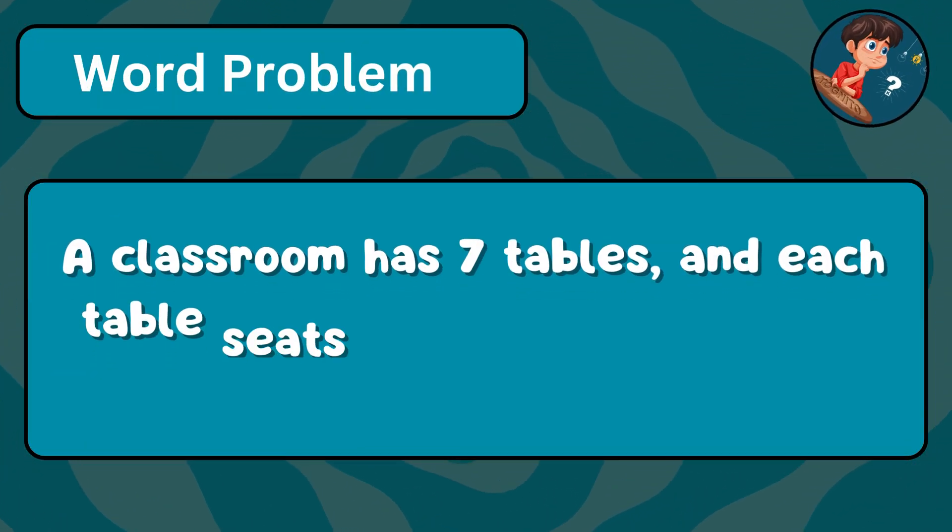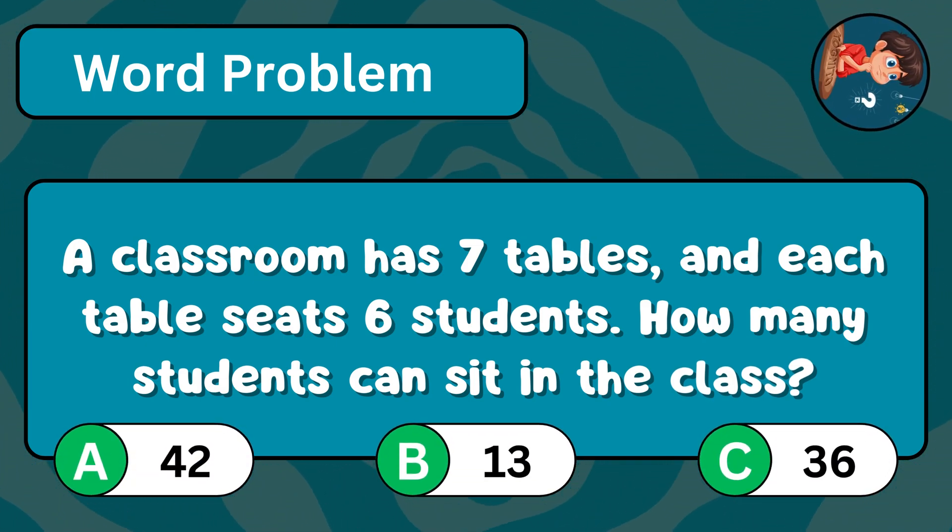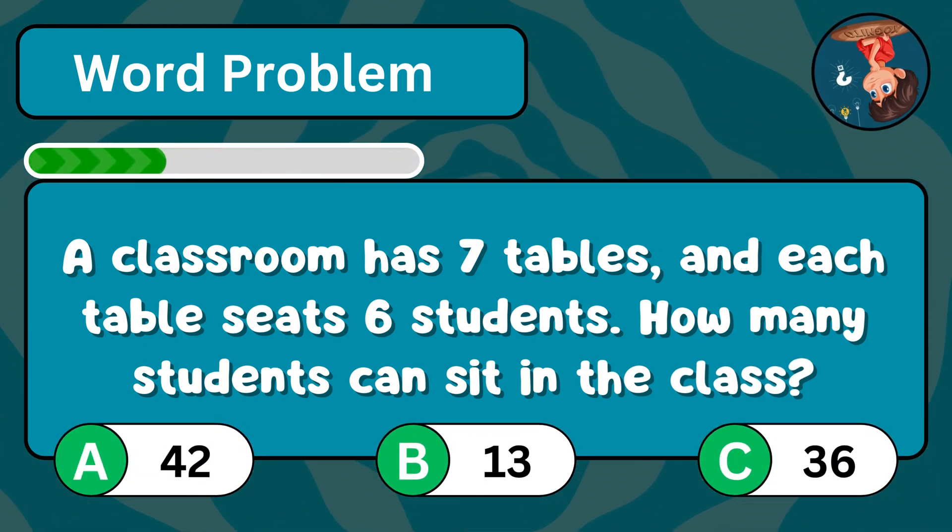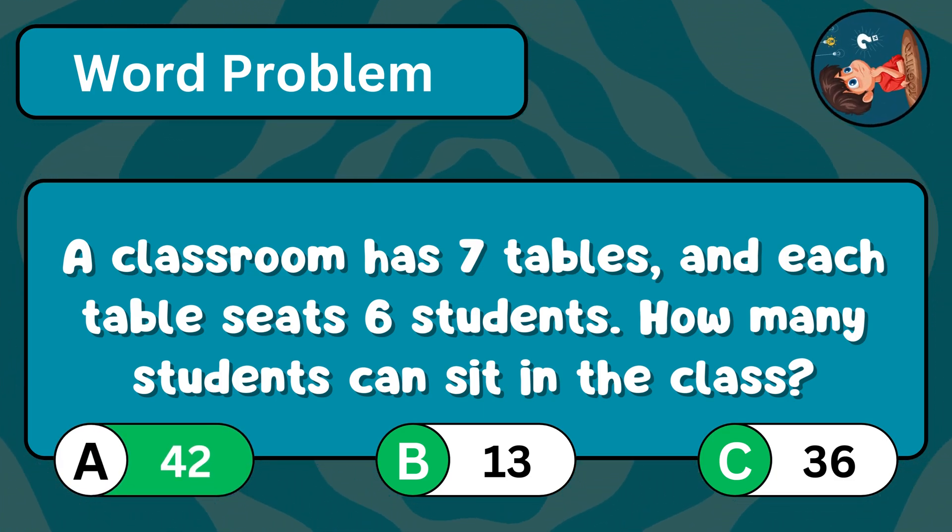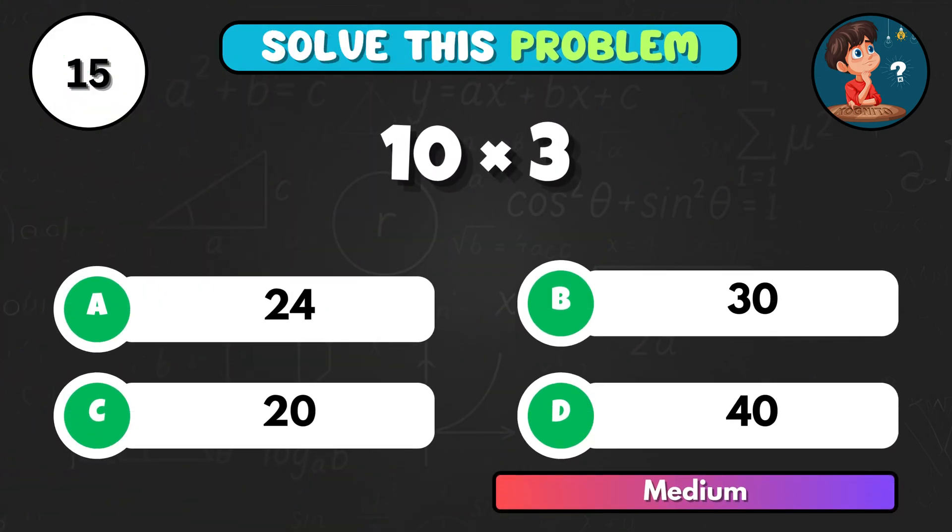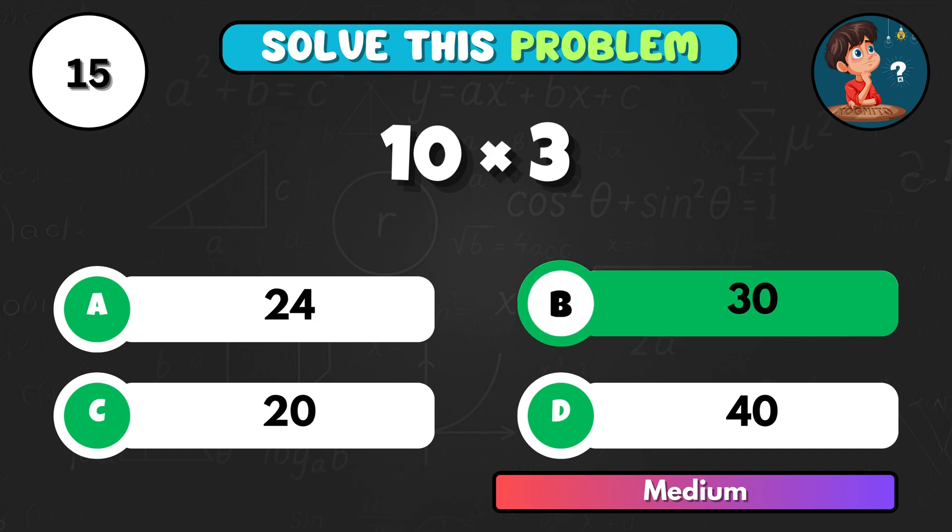A classroom has 7 tables and each table seats 6 students. How many students can sit in the class? It's A, 42. Can you get this one? 10 times 3 equals what? That's B, 30.